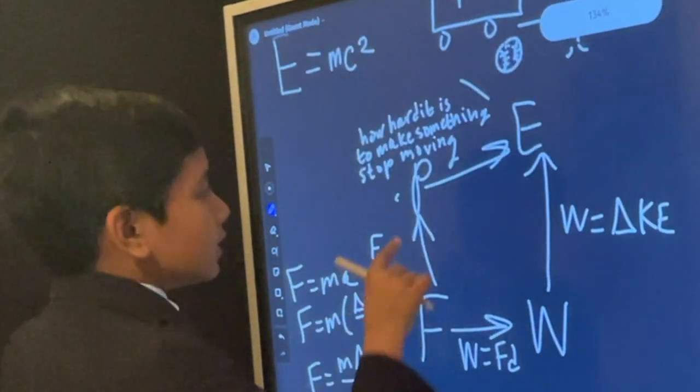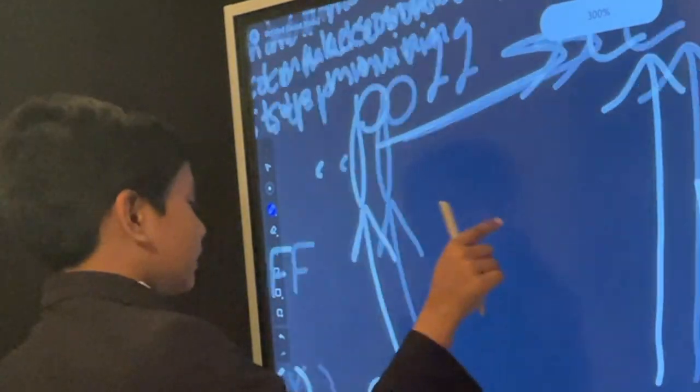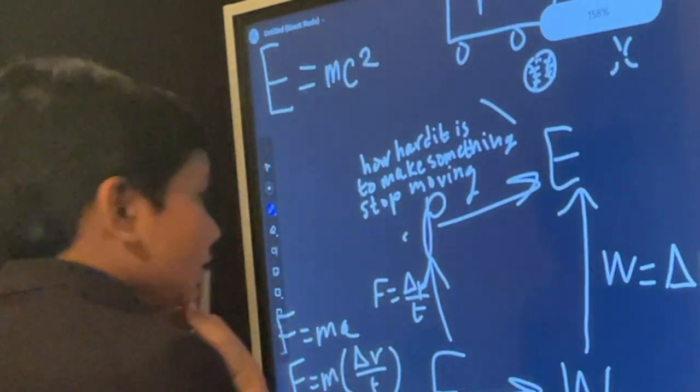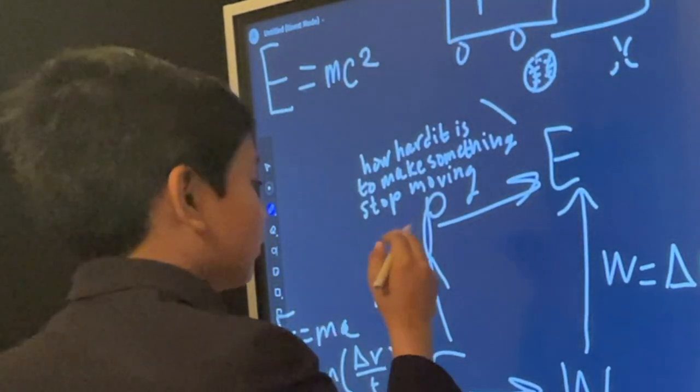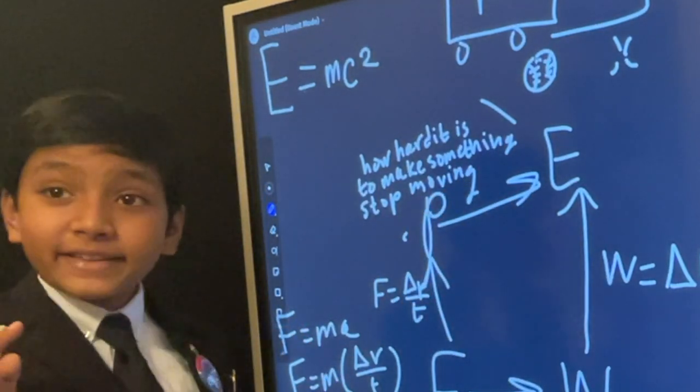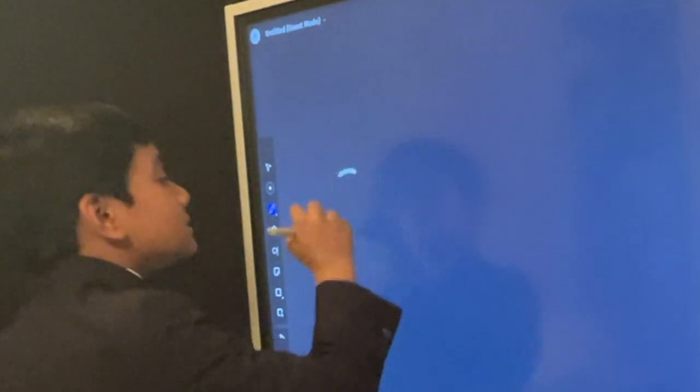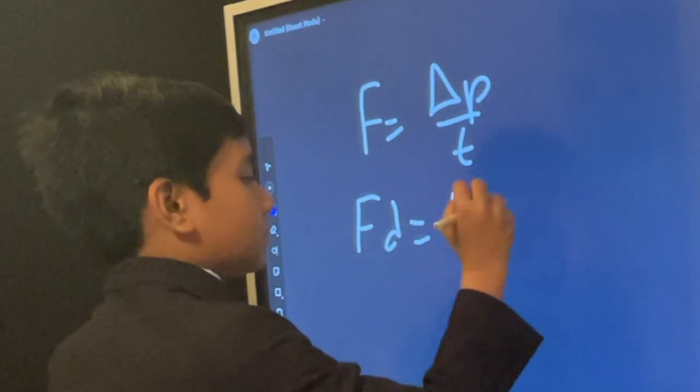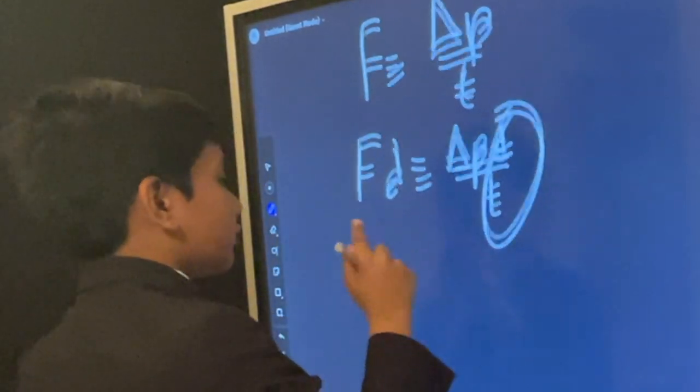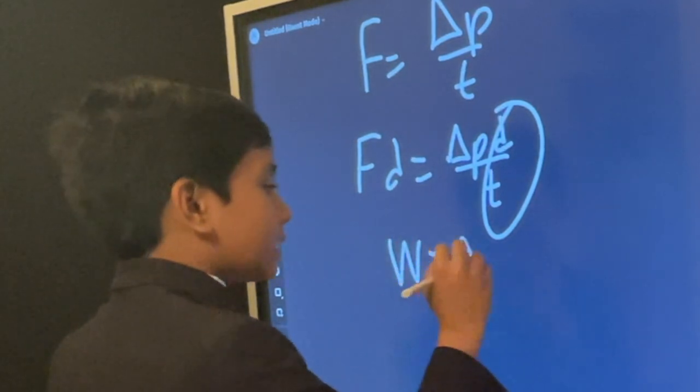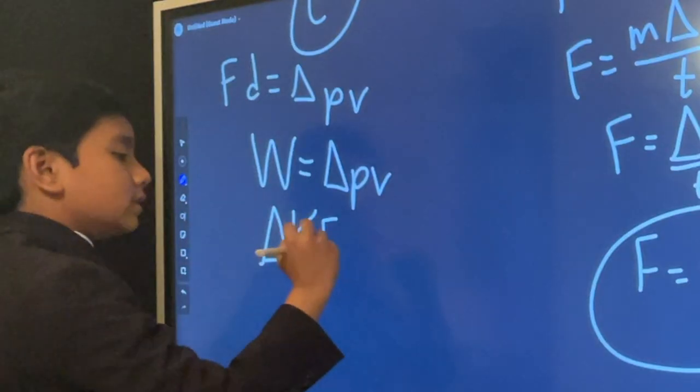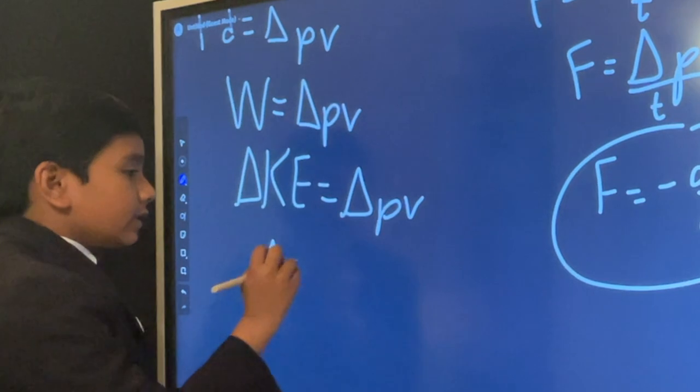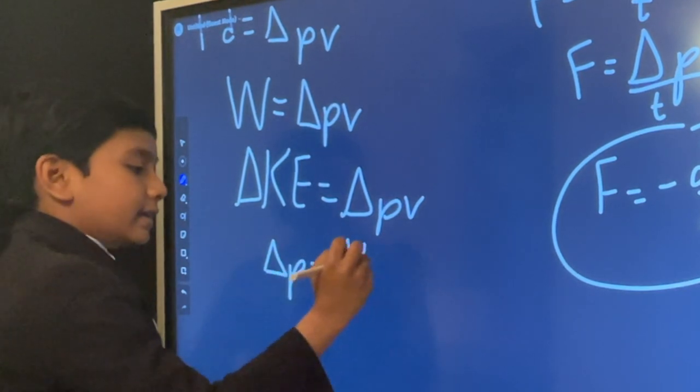Anyway, that gives us F equals delta P over T. Alright, and so now it's pretty clear how P would be related to E. But can we do it? Yes! Of course we can! What we do is F equals delta P over T, giving us delta Pd over T. But this just equates to velocity. So FD is work. That just gets you delta P and delta Ke. So you get this. And then you finally get delta P equals delta Ke over V.